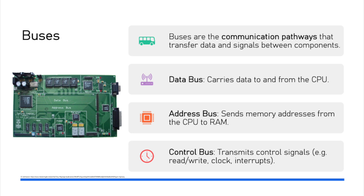The data bus carries data being processed between the CPU, memory, and other peripherals. The width of this bus is really important because it determines the amount of data that can be transferred at one time. Common bus widths are 8, 16, 32, 64 bits and so on — the bigger the bus the more data that can be transmitted. The bus can also act as a bottleneck; for example, you could have a 64-bit CPU but if it only has a 32-bit address bus, the CPU might need to wait two cycles to get all the data needed for processing.